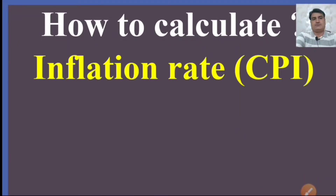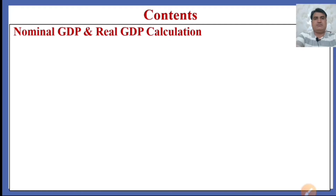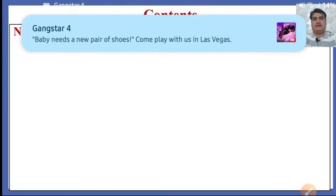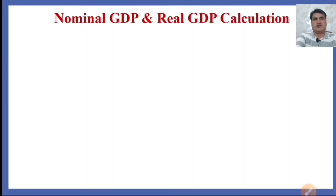In the previous lecture we learned what GDP, GNP, NNP, personal income, and personal disposable income are. Later we learned about nominal GDP, real GDP, and the GDP deflator, and also calculated the nominal GDP and real GDP. In this lecture we are going to calculate the inflation rate, or CPI (consumer price index), using the GDP deflator.